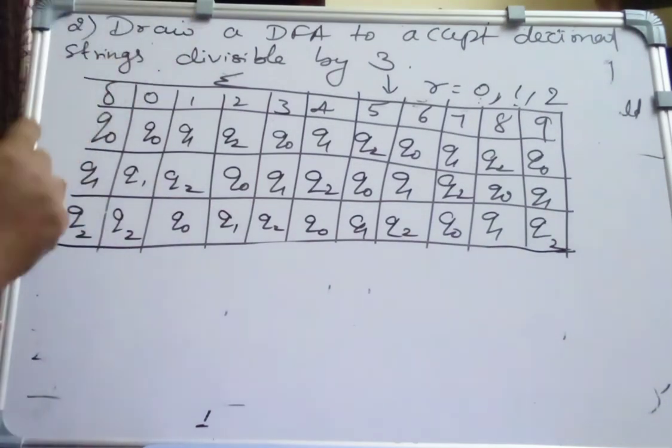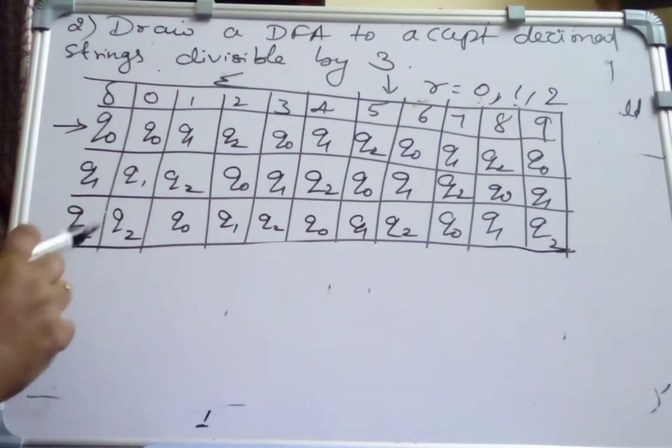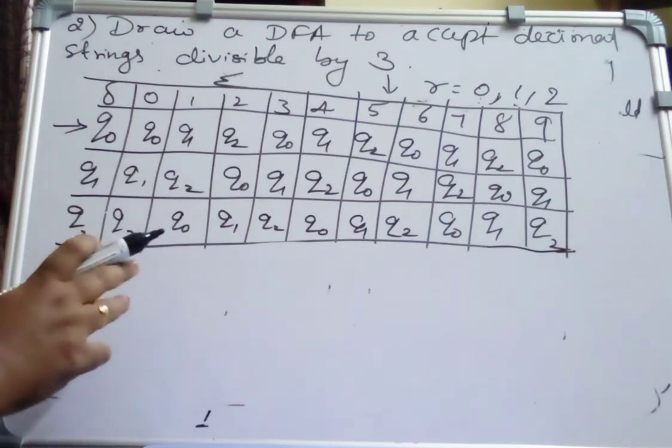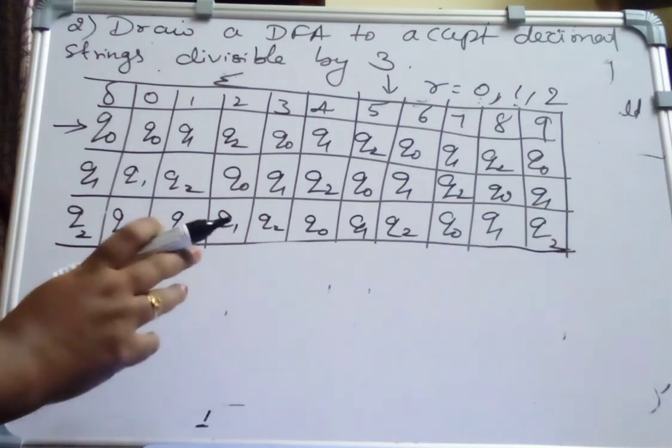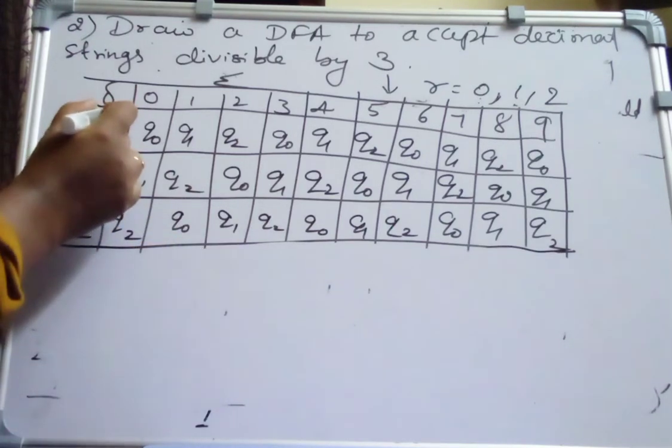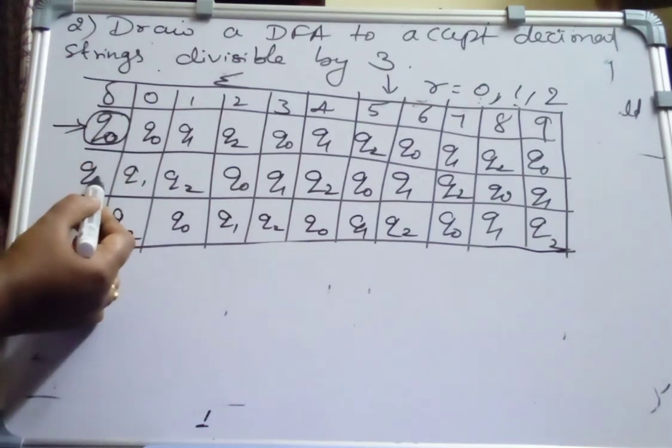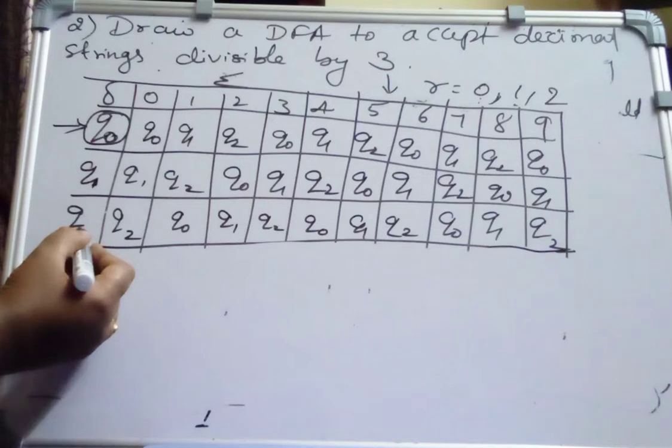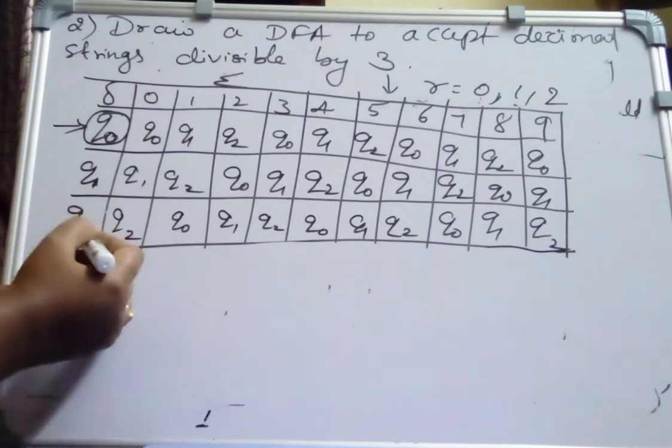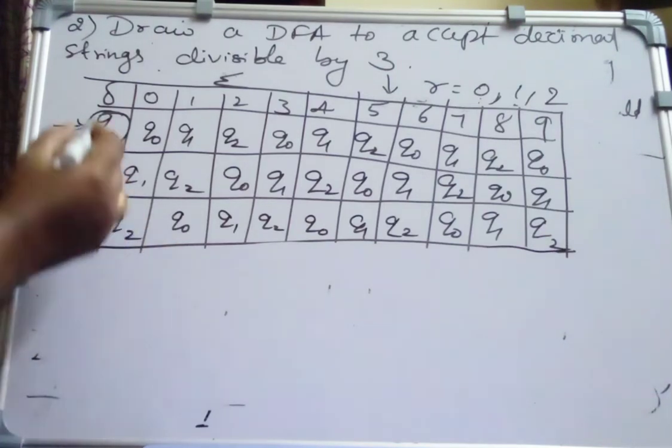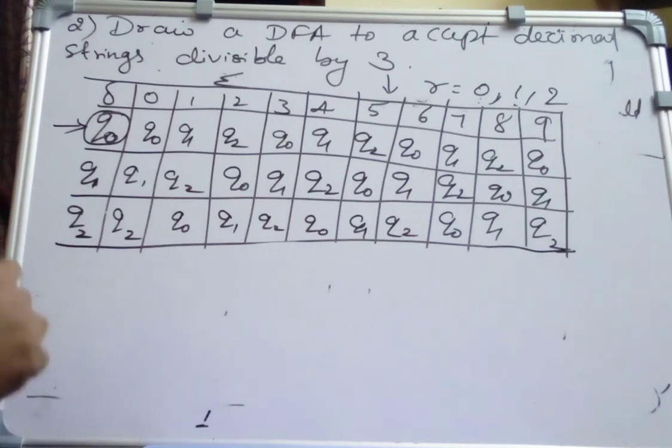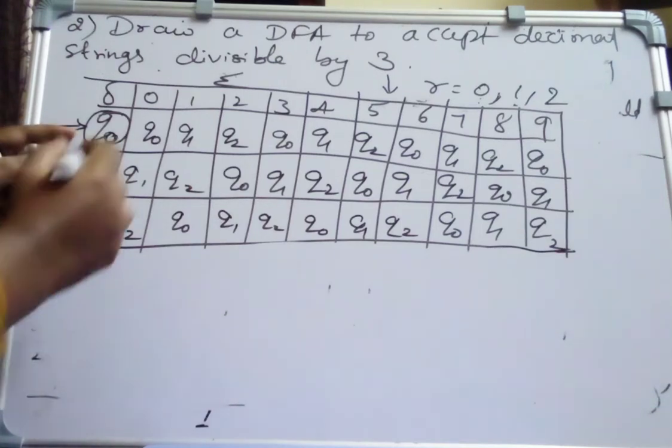Now which is our starting state? Q0 is our starting state. How to identify the final state? Divisible by 3 means what? The numbers should be exactly divisible by 3, which are multiples of 3 are divisible by 3. The remainder is 0. The remainder is 0 is in which state? It is 0 in the Q0 state because Q0 represents reminder 0 and Q1 represents all the states with reminder 1 and 2 represents all the input symbols with reminder 2, that is state Q2. So Q0 itself is our final state. Then how to construct the DFA for this?